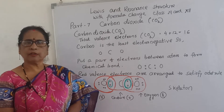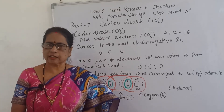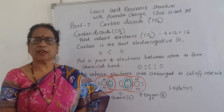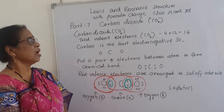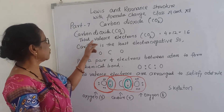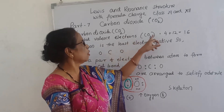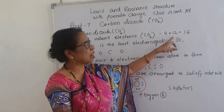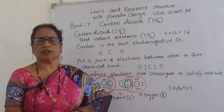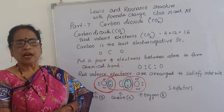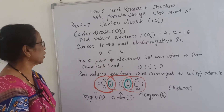First of all we will see what is the valence electron of carbon dioxide. Carbon has valence electron 4 and oxygen has valence electron 6. So the total valence electrons of carbon dioxide: carbon is 4, oxygen is 6 into 2, total is 16. That means 16 is the number of valence electrons of carbon dioxide. Valence electron of carbon dioxide is 16.